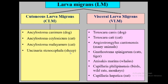Visceral larva migrans is equivalent to the roundworm or Ascaris. According to the definitive host, the different animal species of visceral larva migrans are: Toxocara canis found in the dog, Toxocara cati in the cat, Angiostrongylus cantonensis found in many animals, Gnathostoma spinigerum found in cats and other carnivores, Anisakis marina found in marine animals like whales, Capillaria philippinensis found in birds and wild rats and monkeys, and Capillaria hepatica found in rats.